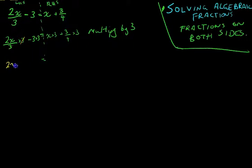And that'll leave us with 2x. We've sort of achieved our goal. We've gotten rid of that divide by 3. But we need to keep working through it. Minus 3 times 3. So, minus 3 times 3 is minus 9.